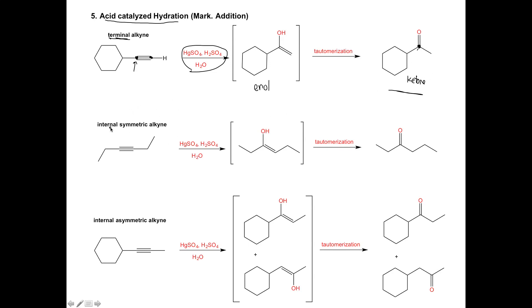Looking at our next example — an internal symmetric alkyne — the same reaction occurs. There is no Markovnikov or anti-Markovnikov position. We break one pi bond, leaving the other pi bond, and add an OH to either side. Because it's symmetric, it doesn't matter if you add the OH to the left or the right — you get exactly the same product. Again you get an enol, that enol is unstable, the double bond moves between the carbon and the oxygen, the hydrogen moves to the other side, and you again get a ketone.